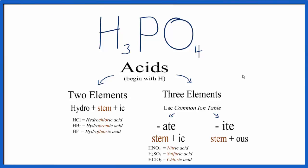To write the name for H3PO4, phosphoric acid, we'll use our flowchart here and we'll use a common ion table.